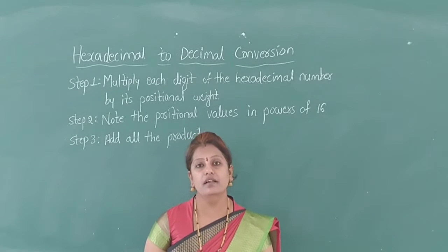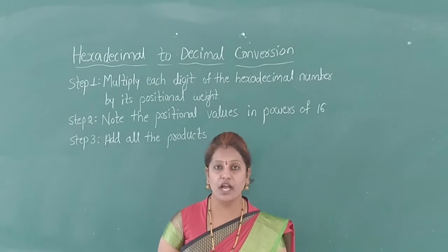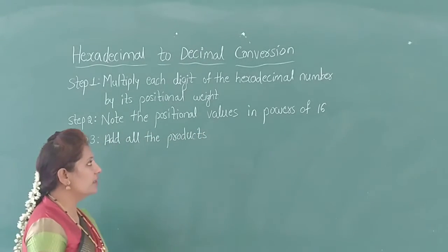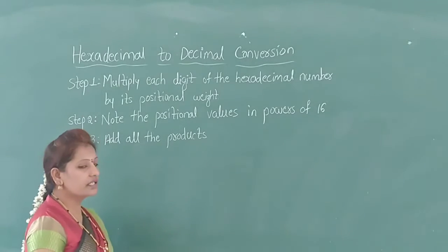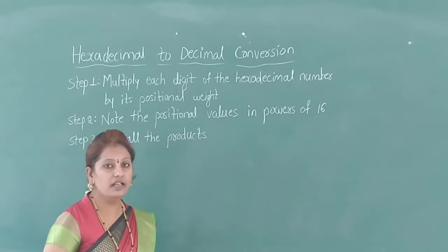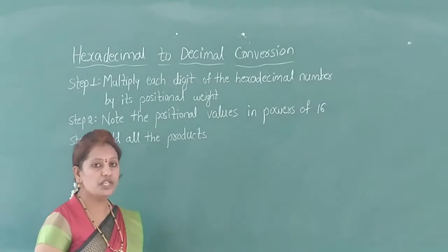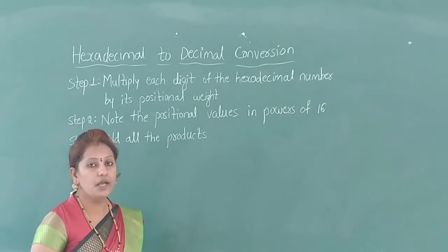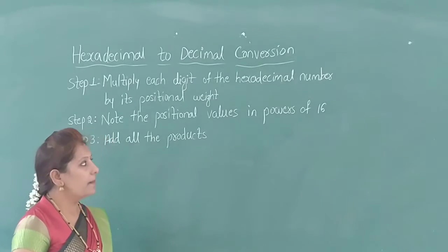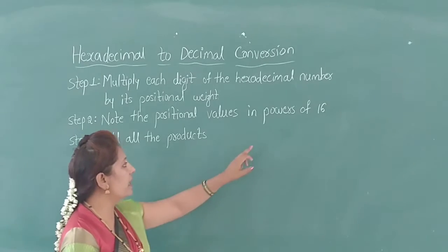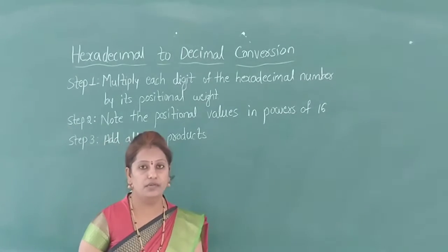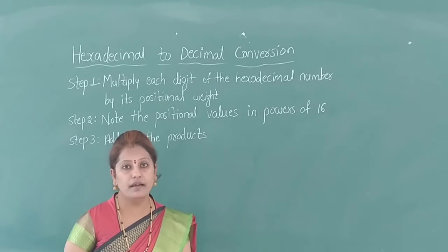To convert hexadecimal number system to decimal number system, we have to follow some steps. We will see the steps one by one. The first step: multiply each digit of the hexadecimal number by its positional weight. Second step: note the positional values in powers of 16, because you are converting from hexadecimal to decimal. Therefore the positional value is noted in powers of 16. Third step: add all the products' values, then the decimal number will be generated.